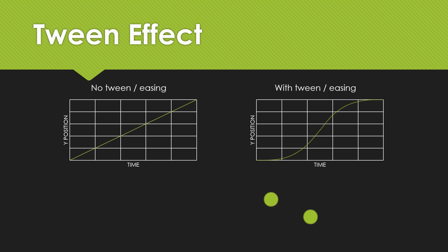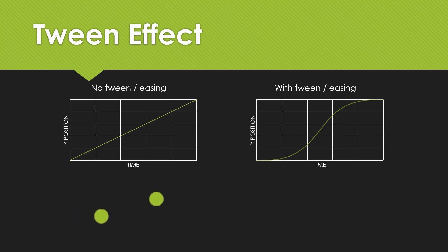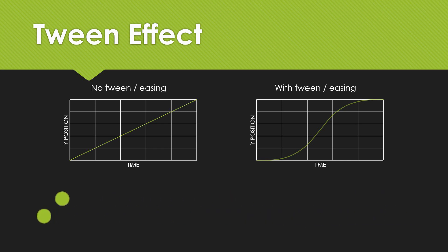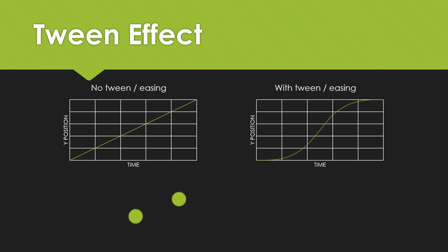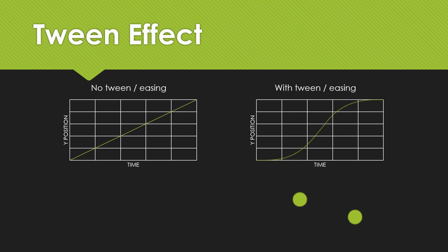You can see that the top ball is moving linearly while the bottom ball is moving with an easing — a quadratic easing. So with this you can see that it's more natural movement, and this is something we're gonna use within our tutorial to give the menu effect a little bit more smoothness.